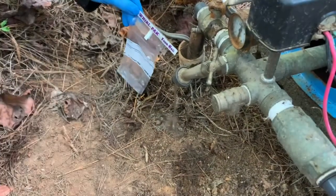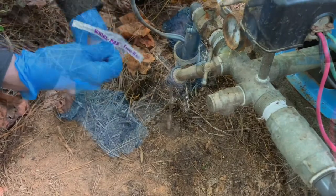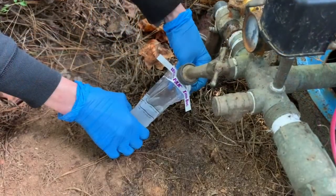To begin, collect a 100 milliliter water sample with the Whirlpac thiobag. Here we're collecting groundwater from a well.